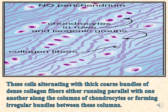These small regions of hyaline cartilage containing chondrocytes alternate with thick, coarse bundles of dense collagen fibers. These collagen fiber bundles are either running parallel with one another in one direction and parallel to the columns of chondrocytes, or they form irregular bundles between these chondrocytes.